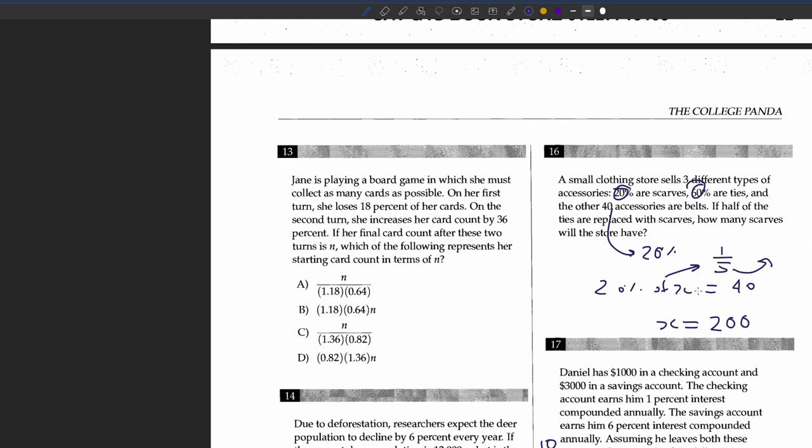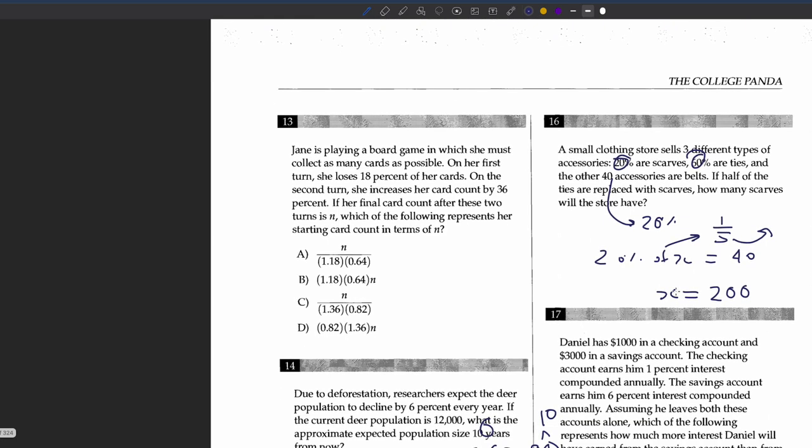There are 200 accessories in total. We calculate 1/5 times 200 to get 40 scarves, and 3/5 times 200 to get 120 ties. Since half of the 120 ties (which is 60) are replaced with scarves, the store will have 40 plus 60, which is 100 scarves.